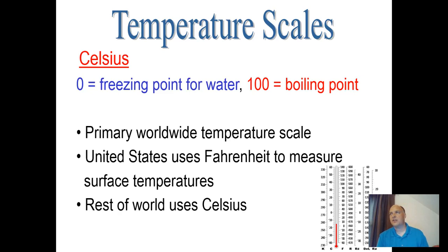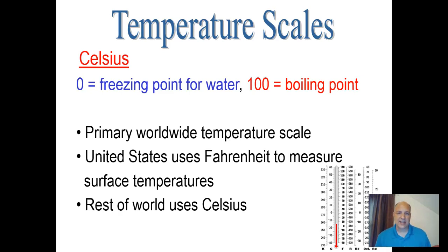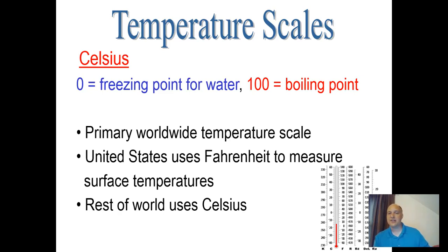If you visit Europe and hear someone say 'it's 30 degrees today, it's hot,' you might think that sounds freezing. But Europeans use Celsius — so 30 degrees Celsius is actually 86 degrees Fahrenheit, which is very warm. That's an important distinction to keep in mind when traveling or communicating with people who use Celsius.